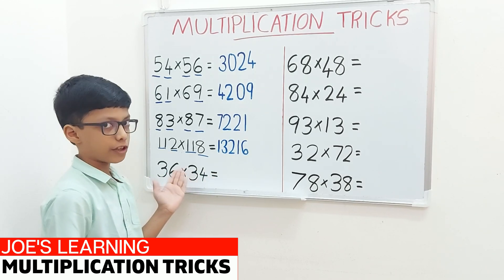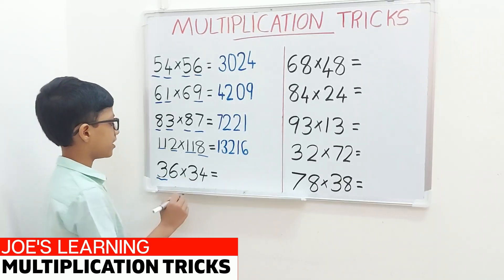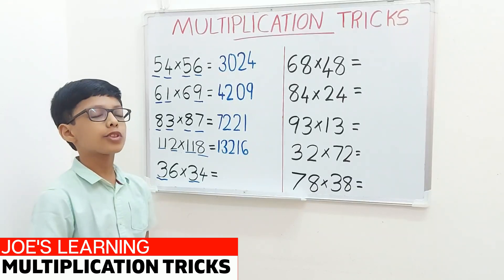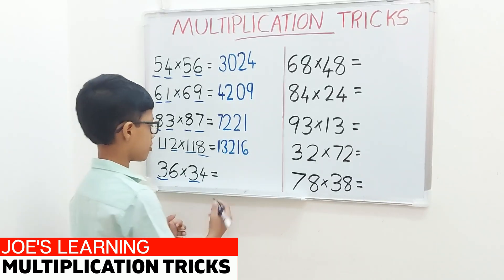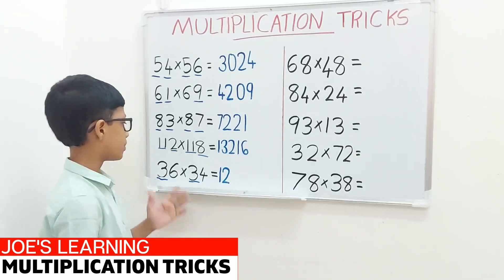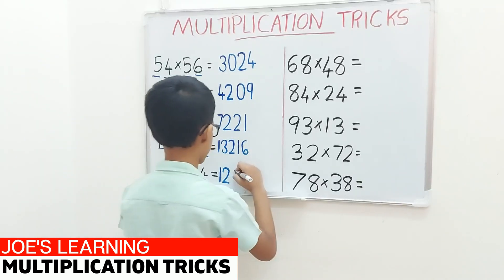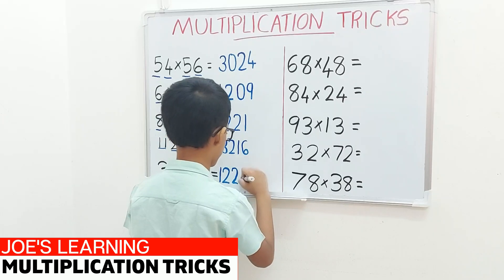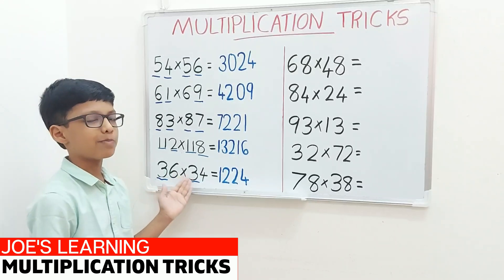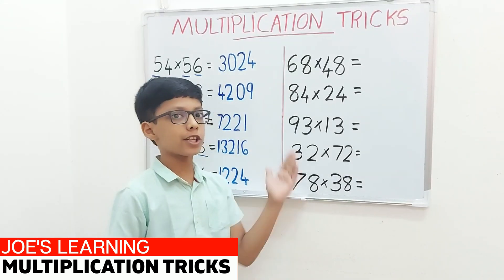Now the example is 36 multiplied by 34. First we have to look at the digit in the tens place, which is 3. Now we have to multiply 3 with its next number 4. So 3 multiplied by 4 equals 12. Write it down as the first two digits of our product. Now we have to multiply the digits in the units place. 6 multiplied by 4 equals 24. Write it down as the next two digits of our product. So 36 multiplied by 34 equals 1224.